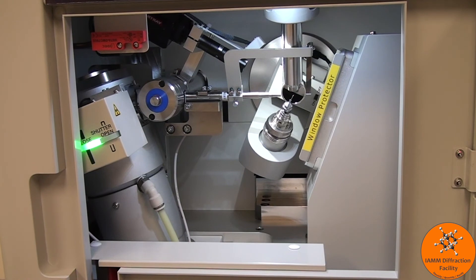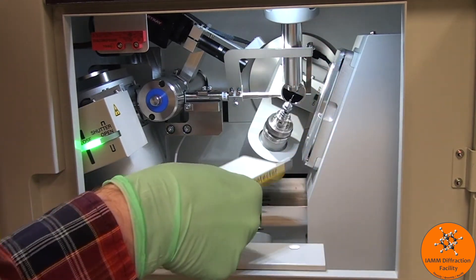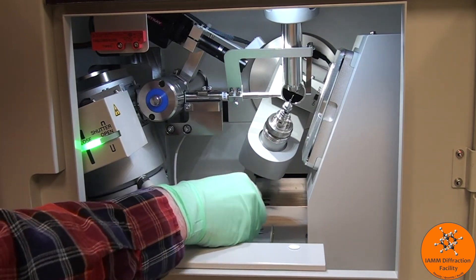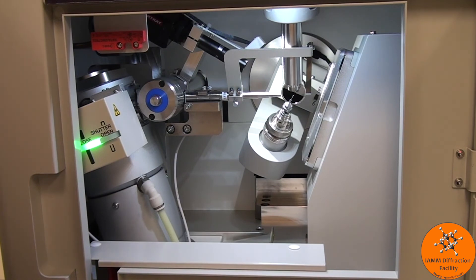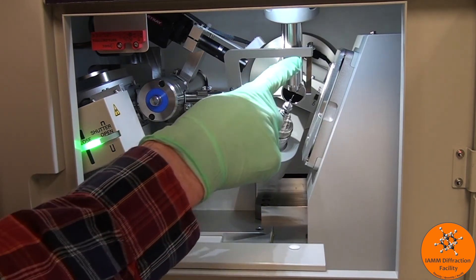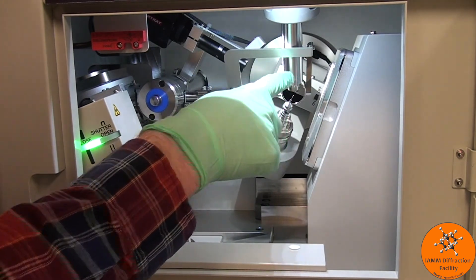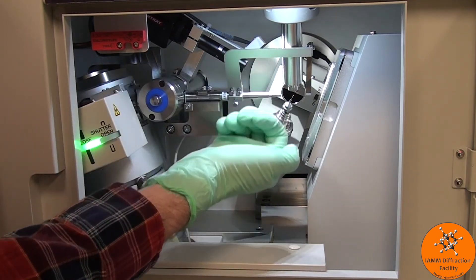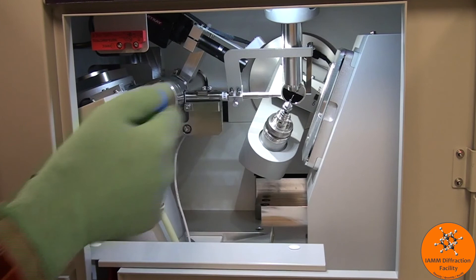Once our crystal is well aligned, we can remove our window protector. One thing that you want to make sure of is that this is all the way up and touching the nozzle. It shouldn't ever move, but if it ever looks like this is tilted a little bit, then gently push it up until it is in contact with the cooling nozzle.